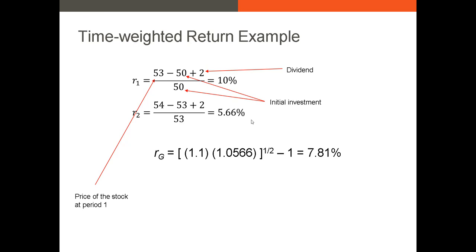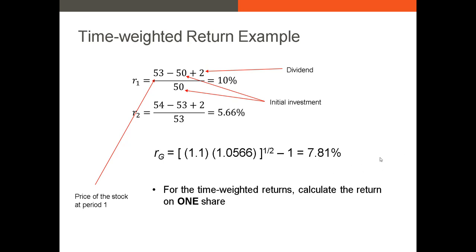The second step is to use the geometric average return. We add 1 to each return — so 1.1 and 1.0566 — take the product of those, then raise that product to the power of 1 divided by the number of periods (1/2), and subtract 1. Our time-weighted return is 7.81%. Notice that we're only calculating the return on a single share — we don't care how many shares were bought in time period 1.